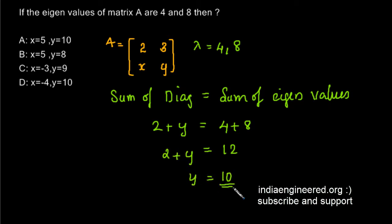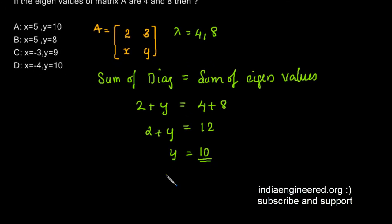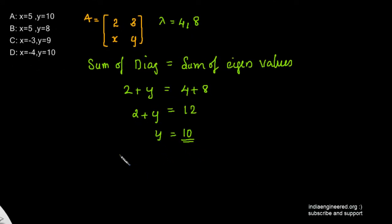Now we have to find out what is x. We have one more property of eigenvalues: the determinant of a matrix is the product of its eigenvalues.